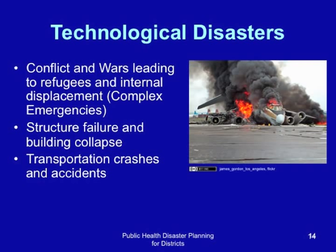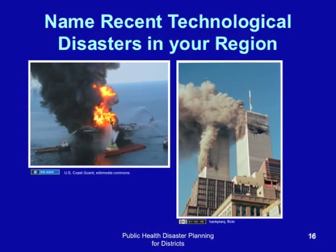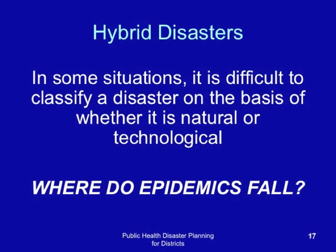Technological disasters also include military accidents, fire disasters, terrorism, and industrial accidents. Hybrid disasters: in some situations it is difficult to classify a disaster on the basis of whether it is natural or technological. For instance, where do epidemics fall?